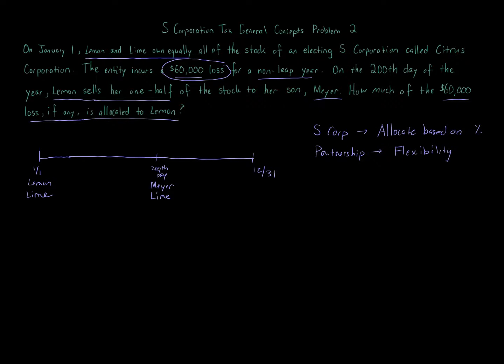This is an S corporation, Citrus Corporation. The way we calculate is always going to be the same. We take the income or loss amounts, multiply it by the ownership percentage, and then we take the number of days that person owned it.